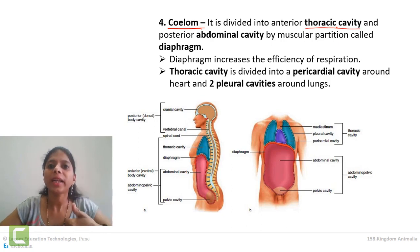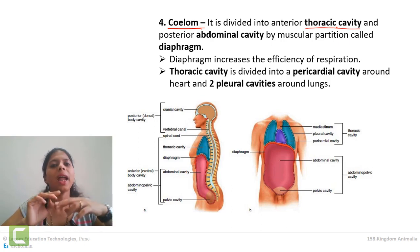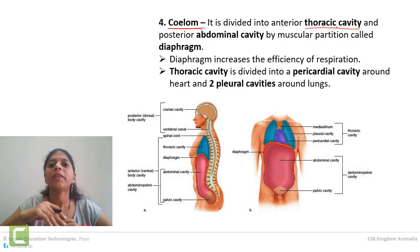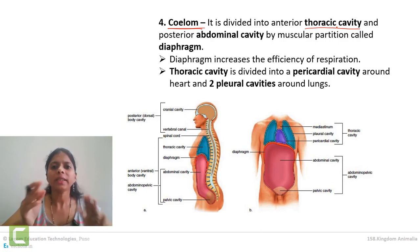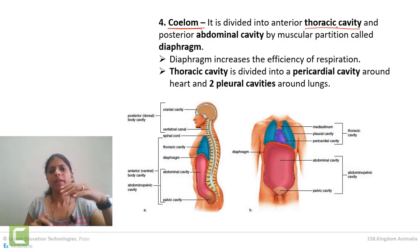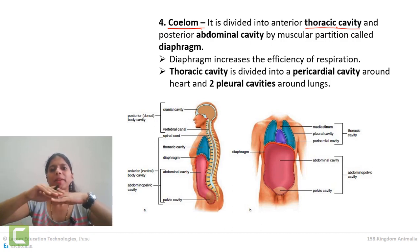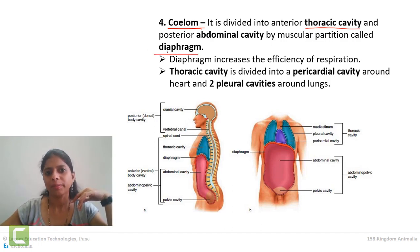The abdominal cavity is the abdomen part where our digestive system is located, kidneys are located, and other organs. These two cavities are present in mammals and between them there is a curtain-like structure called the diaphragm. The thoracic cavity and abdominal cavity are separated by the diaphragm, and the diaphragm also helps in respiration.